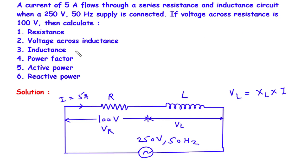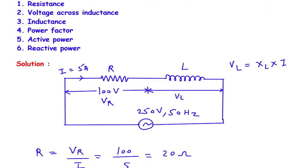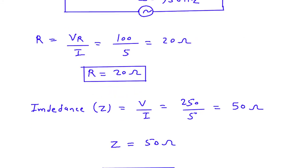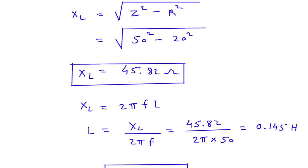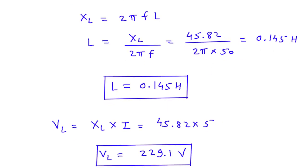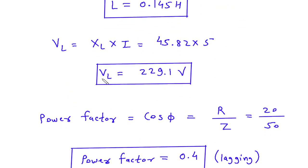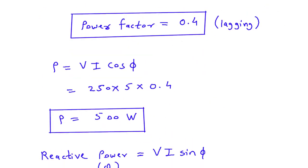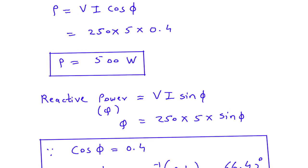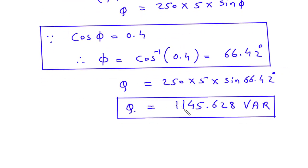Summary of results: resistance R is 20 Ohm, voltage across inductance VL is 229.1 Volt, inductance L is 0.145 Henry, power factor is 0.4 lagging, active power is 500 Watt, and reactive power Q is 1145.628 VAR (volt ampere reactive).